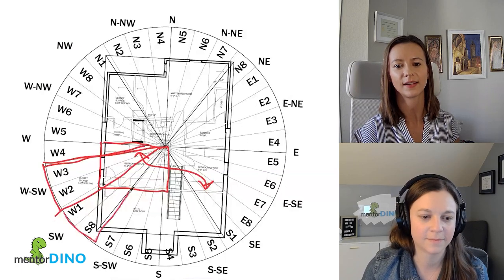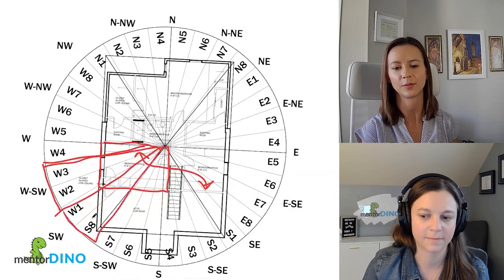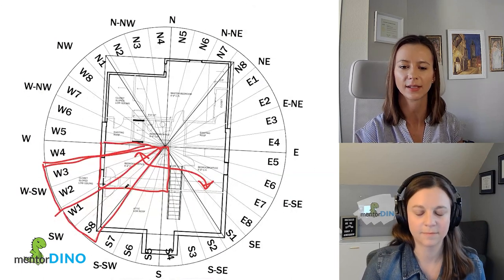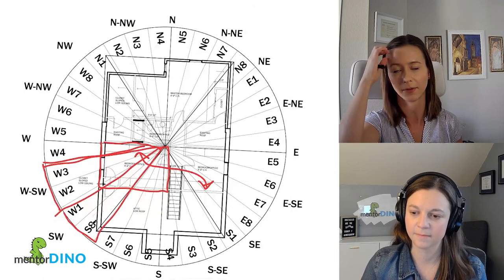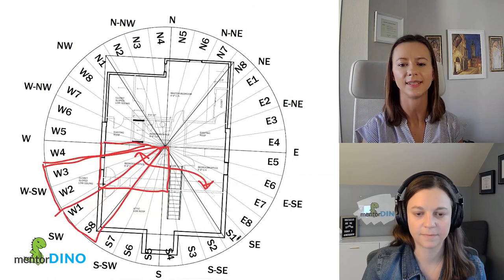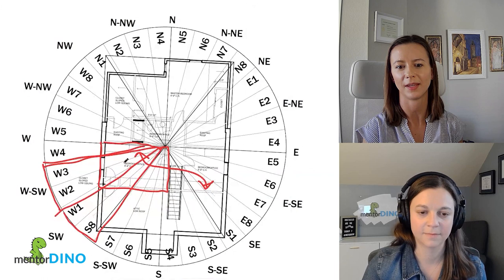And then the southwest area of the home has to do with skills and relationships. If you were learning a musical instrument, this would be a good area to be practicing it, for example, because you're trying to better that skill. But ideally, if you guys switched, that would be better.